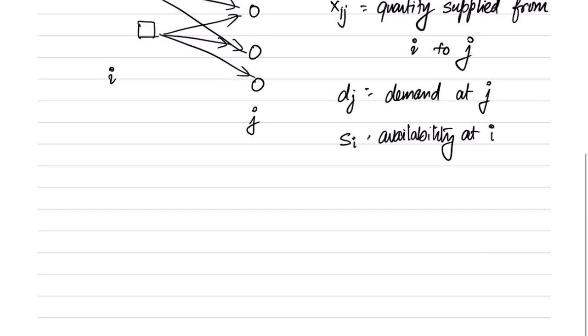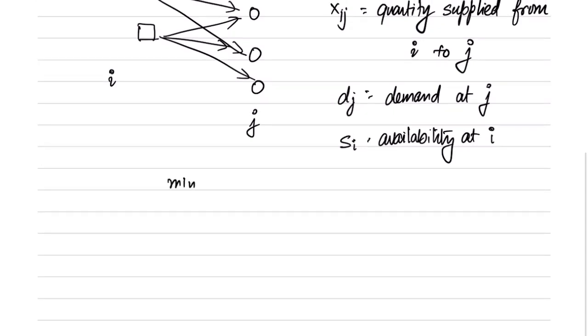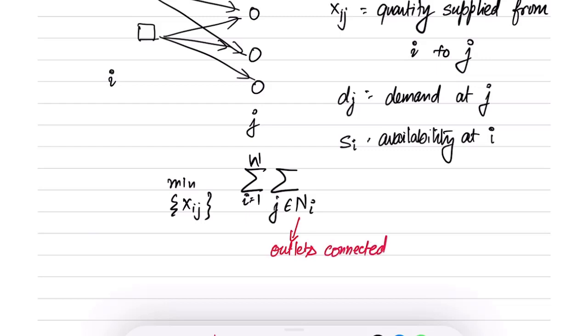For that company the objective function of interest would be minimum over all Xij. It will schedule its quantities such that it minimizes summation over i from 1 to w, the total number of warehouses, and j which are neighbors of i. So ni denotes the outlets that are connected to warehouse i.